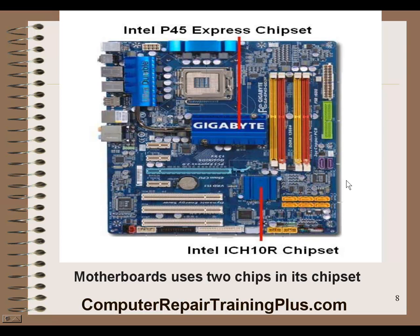Here's an example of a Gigabyte motherboard with the Intel 45 Express chipset. This is your North Bridge; your South Bridge is down here — that's your I/O controller. The North Bridge controls your memory, so your memory slots are right next to it. There's also a PCI Express slot for your video card. So your CPU, video card, and memory data flow are all controlled by the North Bridge. The South Bridge controls everything else: all your PCI slots, SATA slots, USB slots, and anything else connected to the motherboard.